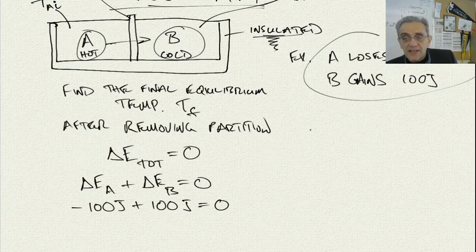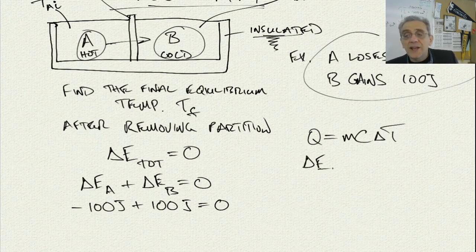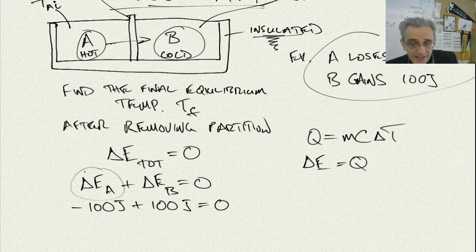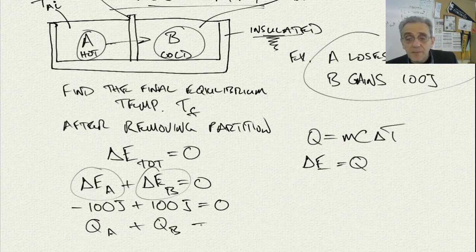Since we know that the heat transferred into or out of a material is Q, and we know Q is equal to MC delta T, that means the change in the energy is equal to Q. In other words, if it's losing energy it's a negative Q, and if it's gaining energy it's a positive Q. That means we can say QA plus QB must still be zero, because the outside container is insulated.